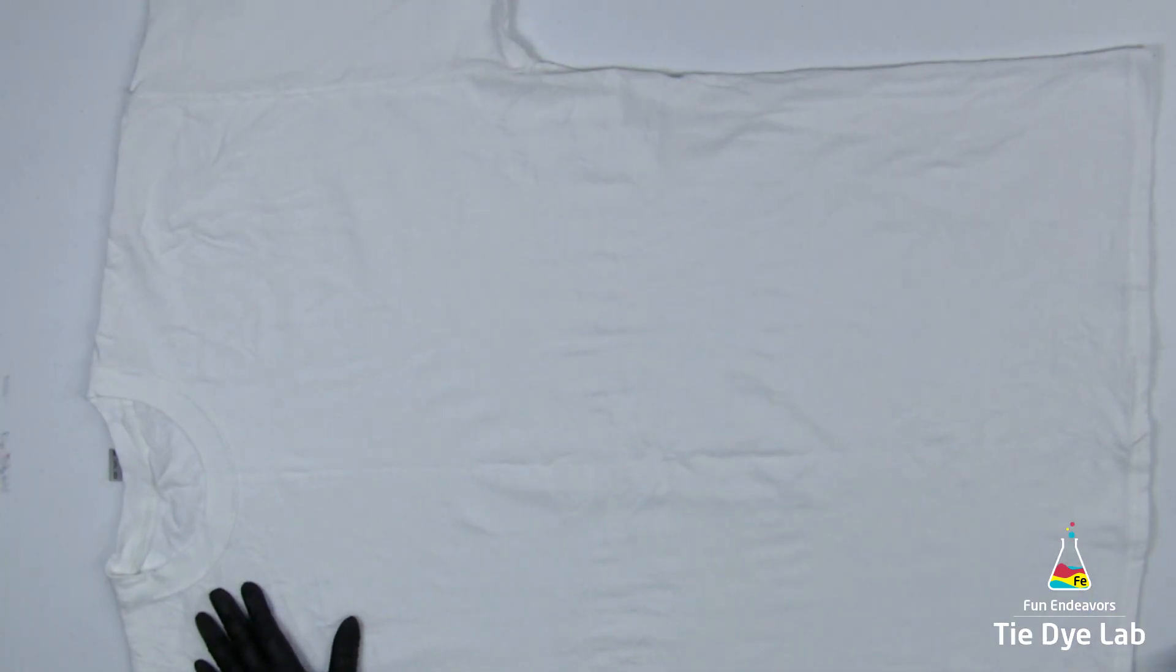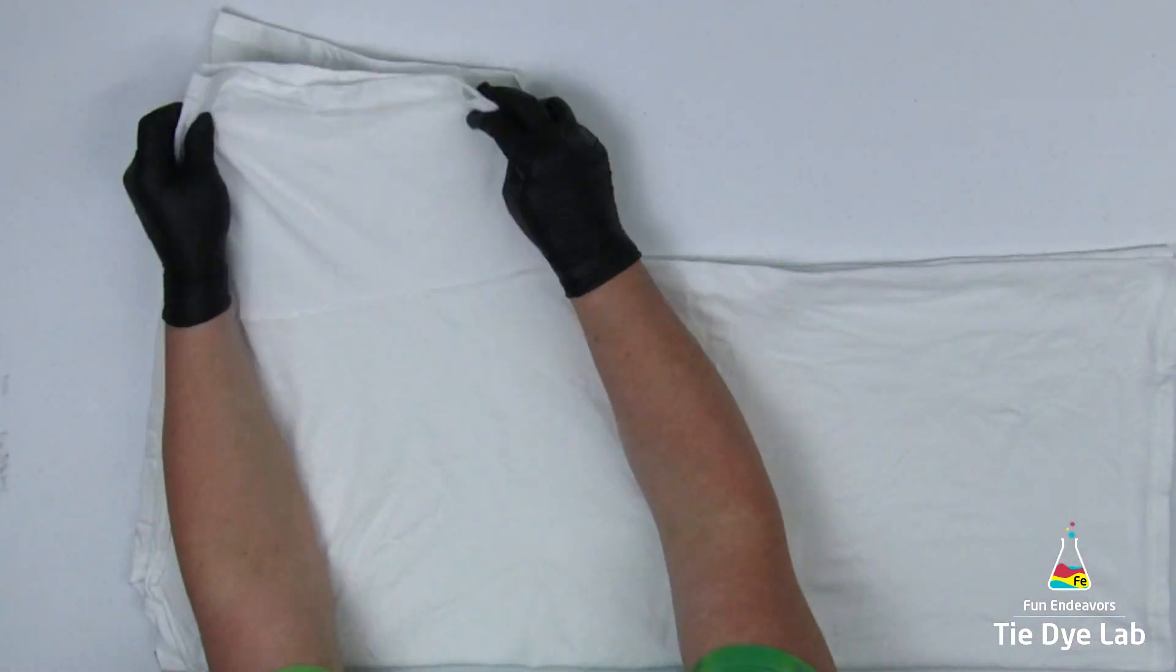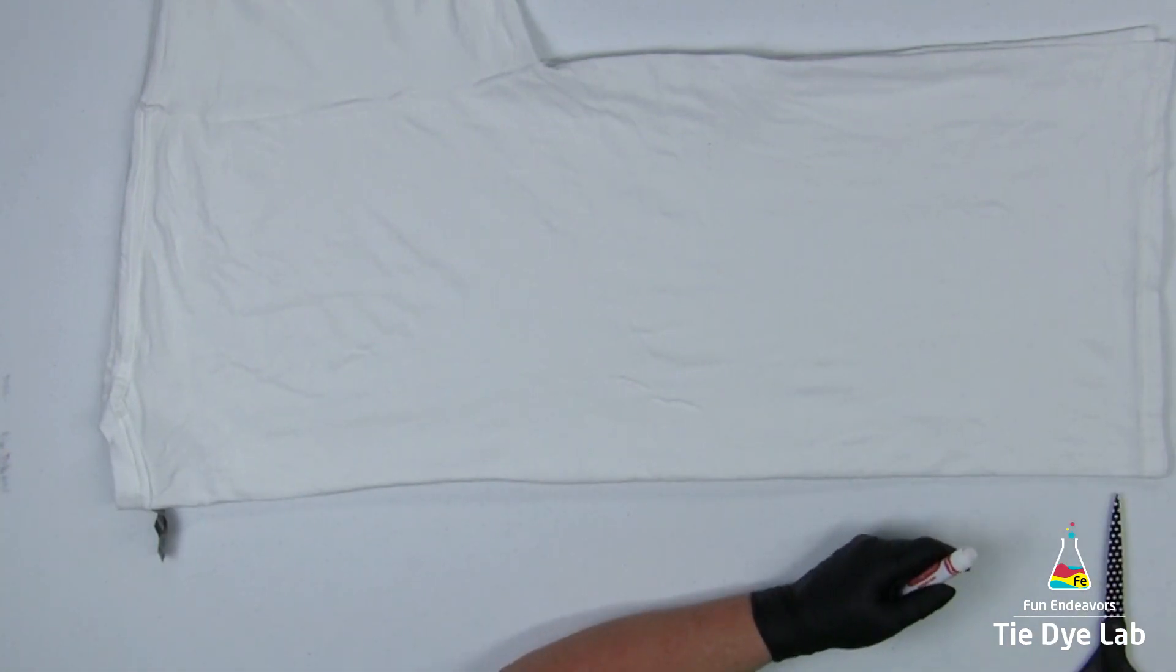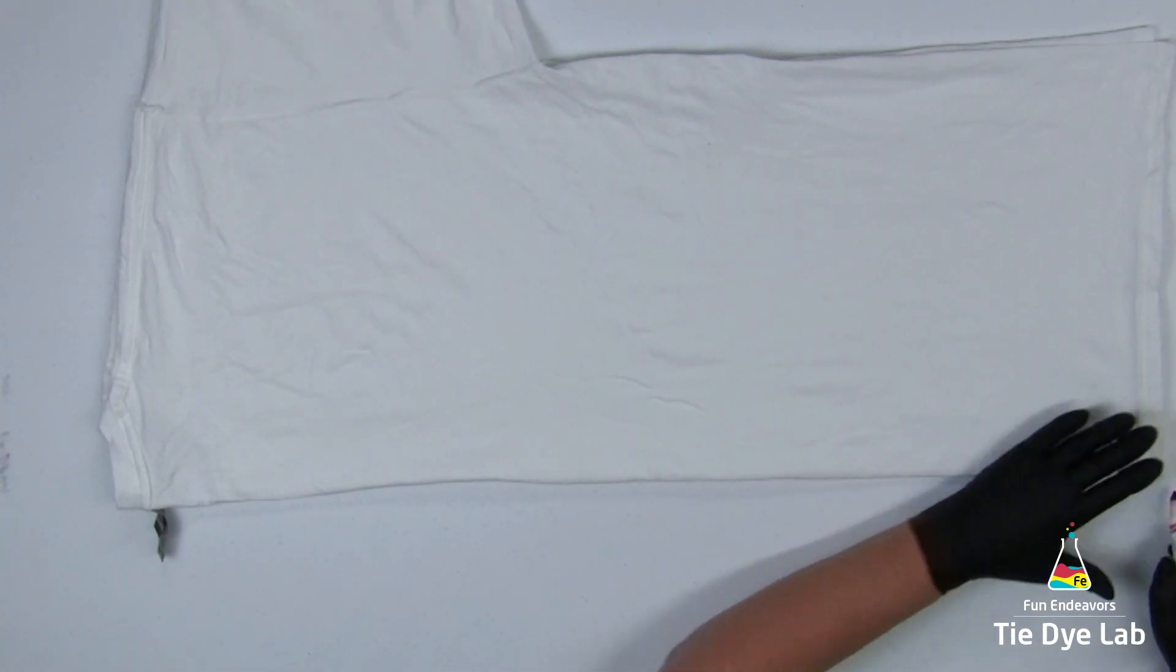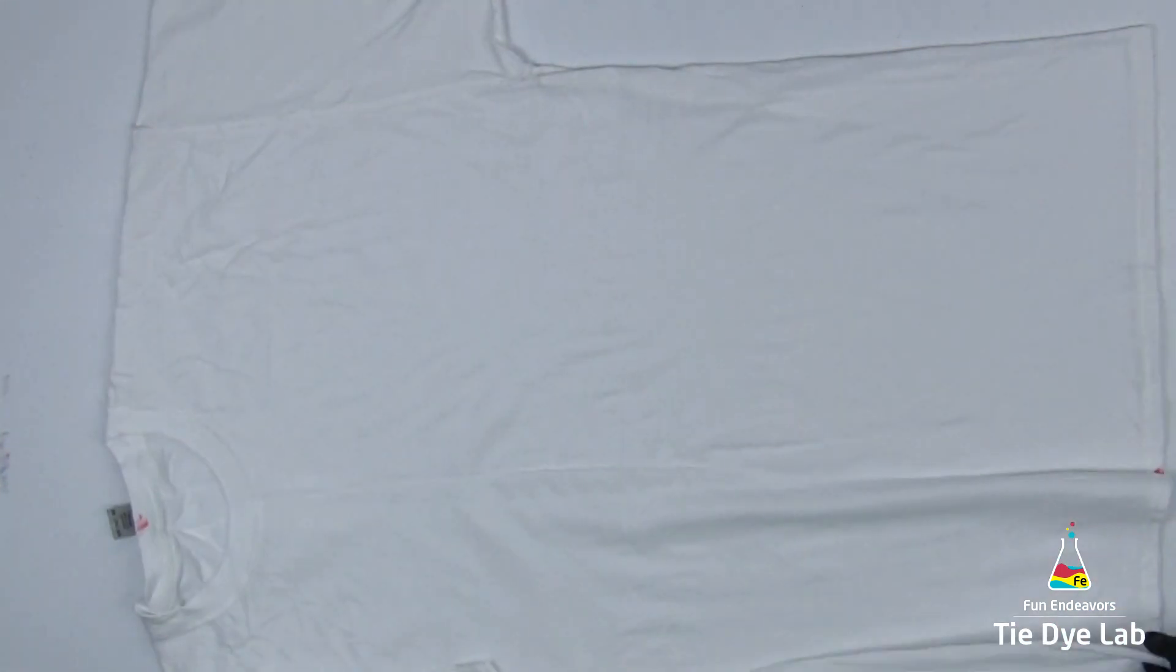I also have it turned inside out. To begin, I'm going to center the shirt, which means that I'm going to put the center of the front of the shirt right up next to the center of the back of the shirt. That way, as I dye the shirt, the front of the shirt's going to be more symmetrical and the back of the shirt will end up more symmetrical.